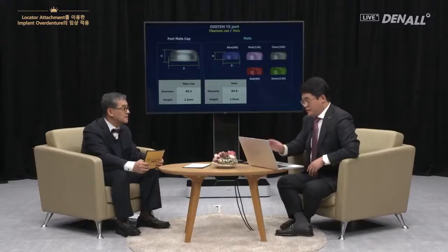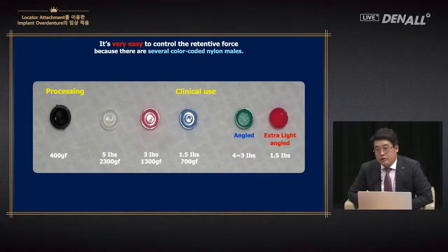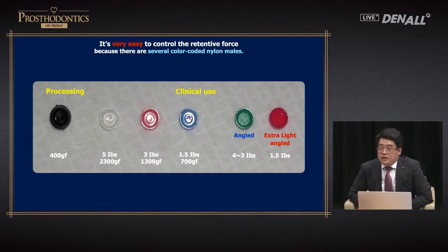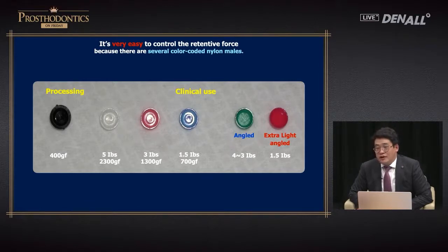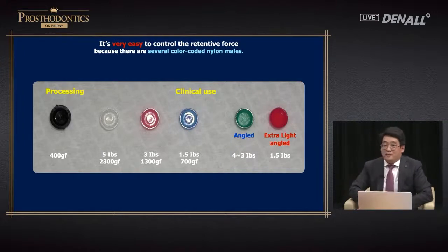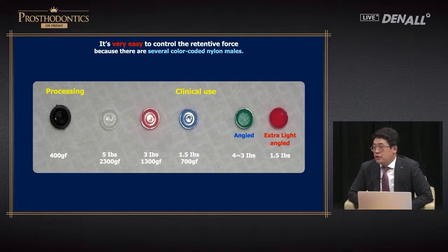The retentive force differs depending on color: black is 400 g force, blue is 700 g, pink is 1300 g, white is 2300 g — there is a stark difference. Even with black, patients are very satisfied. The companies say you can use each for 2–3 months. I have the patient use the black one for some time and then move on to blue. Personally, I have never used the white clinically — once or twice I tried it and it's really strong. What should be a removable prosthesis becomes essentially fixed. One patient came in unable to remove the denture for a week when using pink.